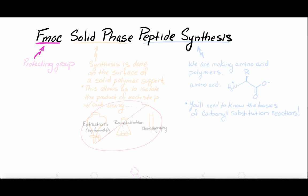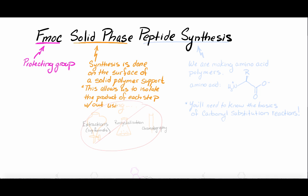FMOC is a special protecting group which we'll use to protect amine functional groups from reacting when we don't want them to. Solid phase synthesis is a powerful strategy for multi-step reactions. It means that we will synthesize our molecule on the surface of a solid polymer support, which allows us to isolate the product from each step without tedious isolation methods. The solid phase strategy saves us lots of time and dramatically improves our yield of product.